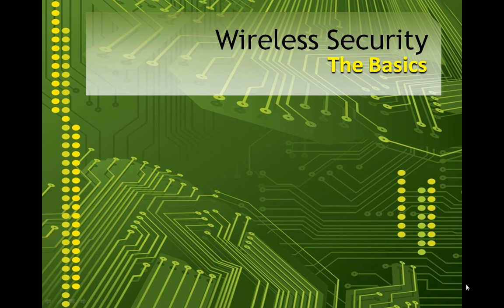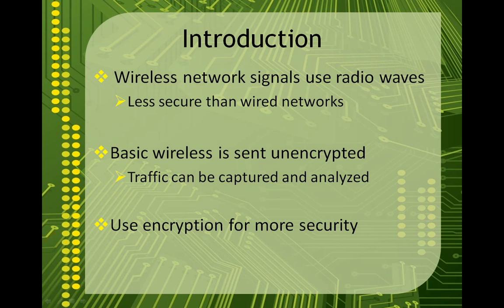In this presentation we're going to take a look at basic wireless security. Wireless network signals are broadcast using signals similar to the same radio waves that you receive on AM and FM radio. Obviously this is going to be less secure than a wired network because the signal is traveling through the air instead of on a closed wire loop. Your most basic wireless signal is sent completely unencrypted, therefore the traffic can be captured and the packets can be analyzed. The information contained within is often sent in clear text and can easily be read. You should always use encryption when using wireless so you'll have better security.